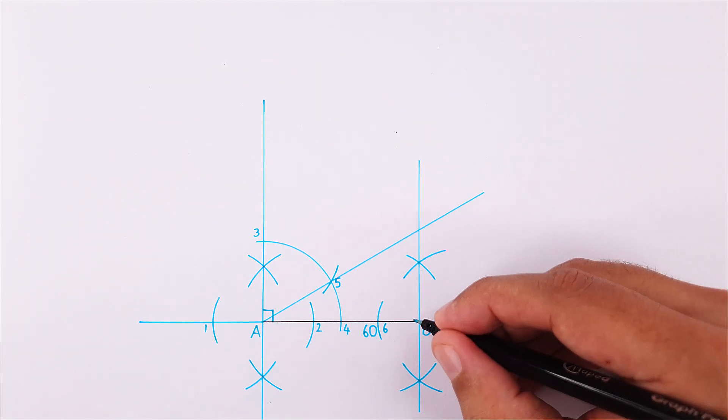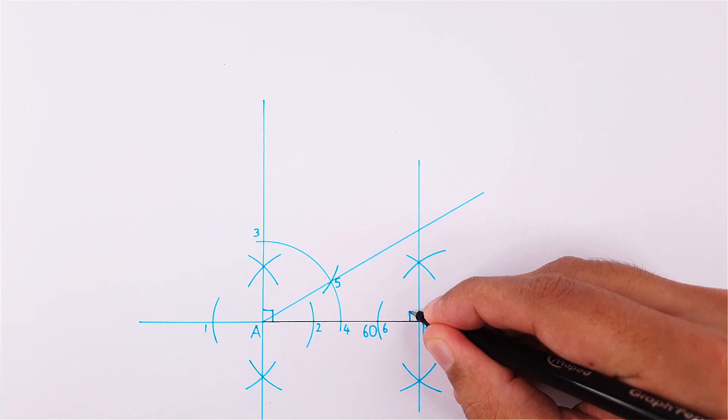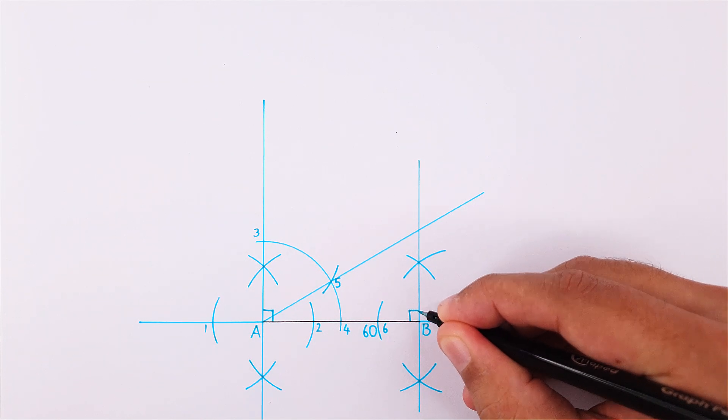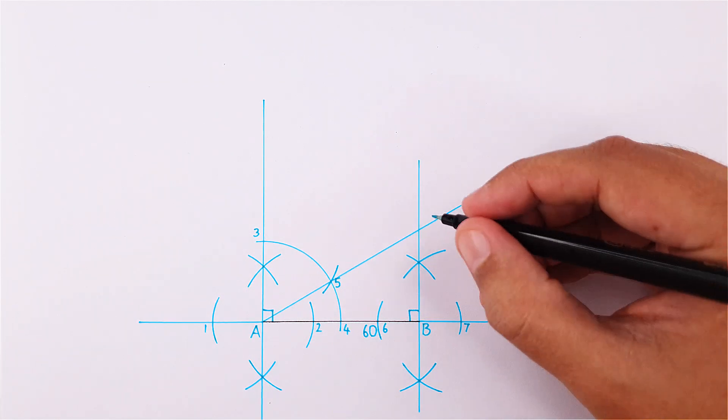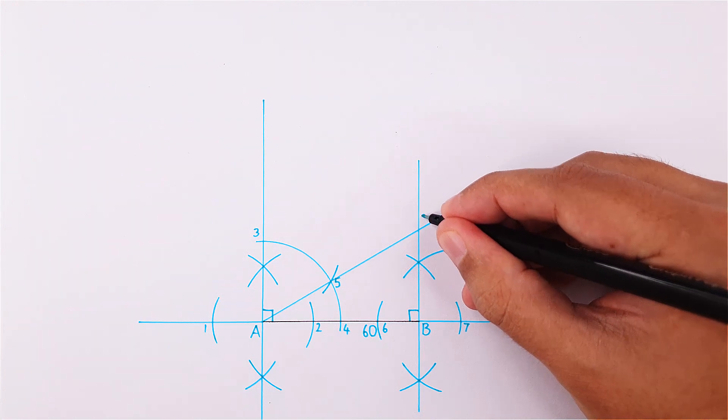Where the 30 degree line intersects our second perpendicular bisector, label it as point 8.